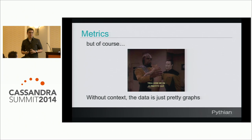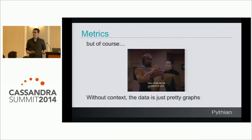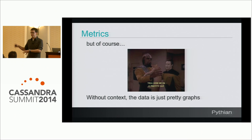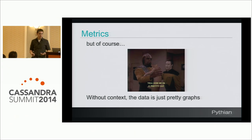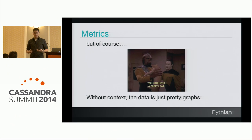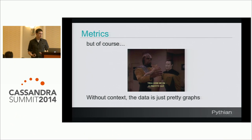Just having the data isn't important enough — you really need context for it. Otherwise you just have a pretty graph to show your manager in your NOC. You really need to understand what they mean. As I go through this talk, I'm going to try to provide context and explain things, though I can't go into too much detail because of time limits, so I'll give a high-level overview of many of the subsystems.